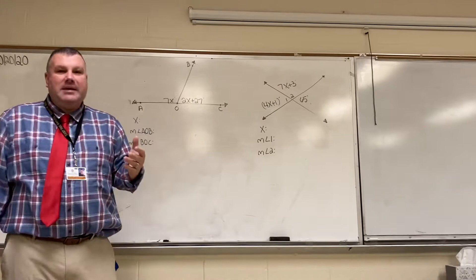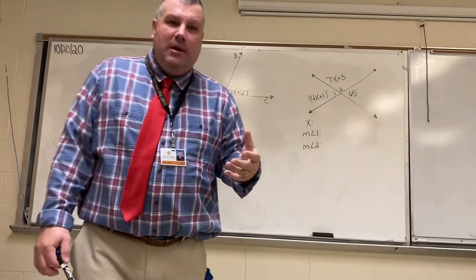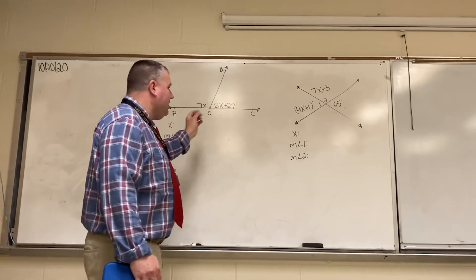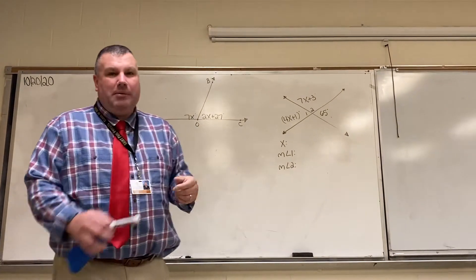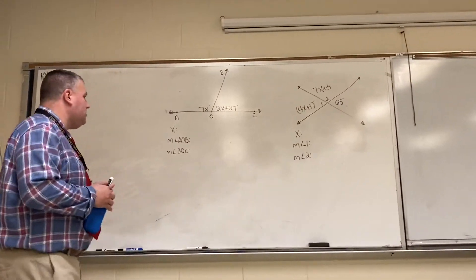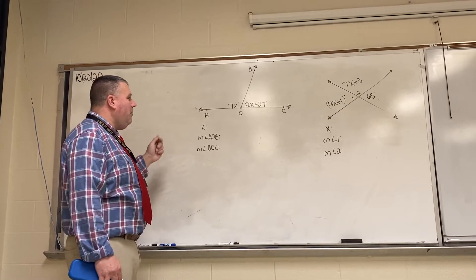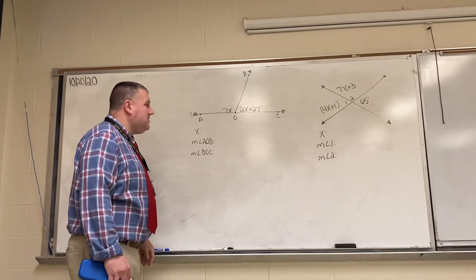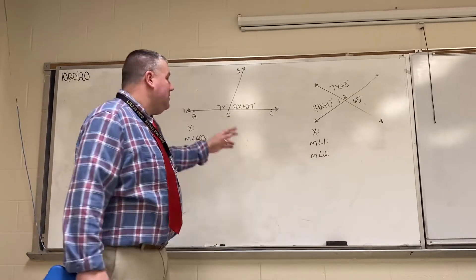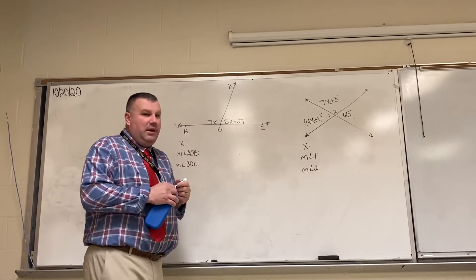The worksheet you're going to be asked to complete today is going to be very similar. It's going to have different types of examples like this. Let's go through and set up the first equation here. They want to know the value of x, the measurement of angle AOB, and the measurement of angle BOC. If we go through and solve this correctly, these two angles should be equal to 180 degrees.